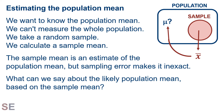It is often the case in statistics that we want to know the mean of a population. We can't measure every individual in the population, so we have to take a random sample from that population and calculate the mean of that sample to estimate the mean of the population. The sample mean is an estimate of the population mean, but sampling error makes it inexact. The mean of the sample will never be exactly the same as the mean of the population.